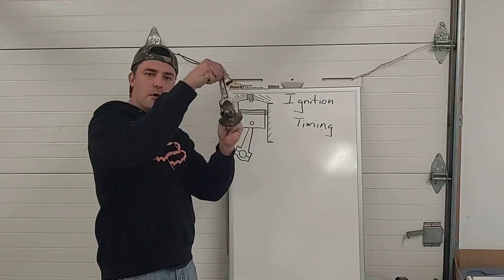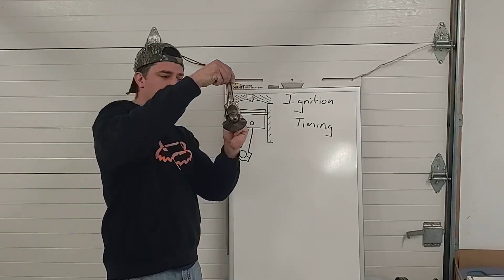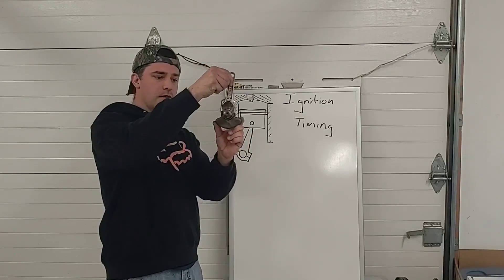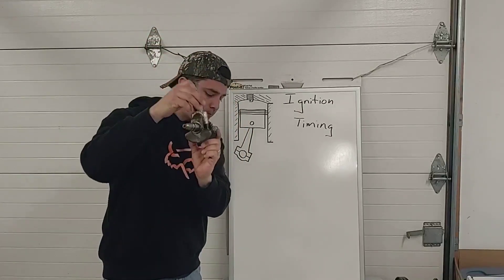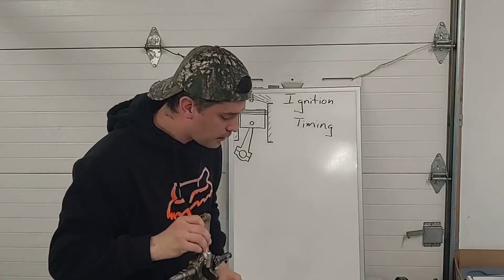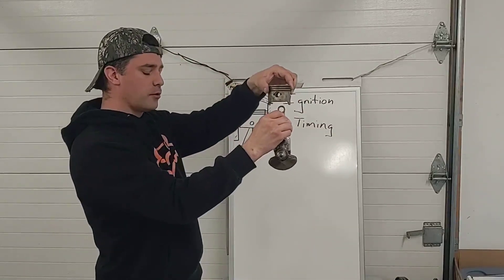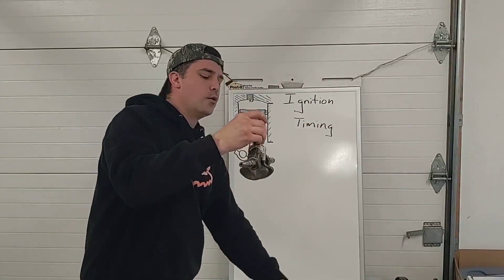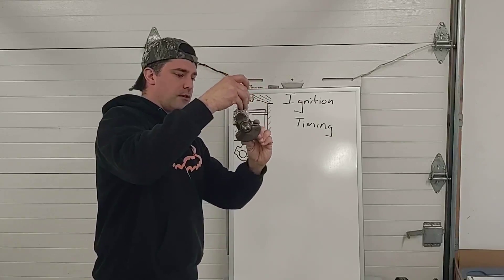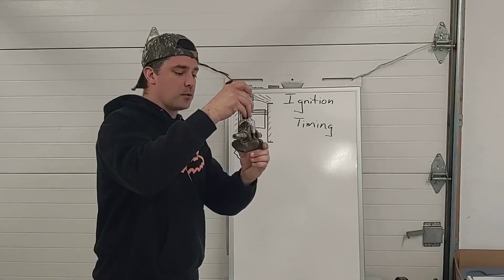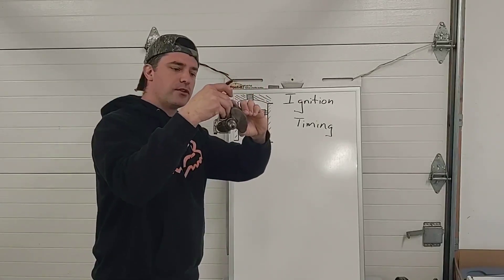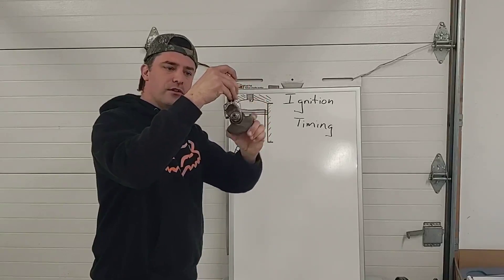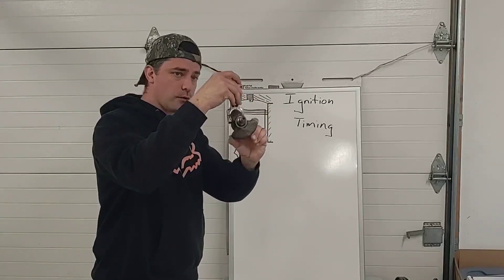As you know, the crankshaft is connected to the piston via a connecting rod. We're going to use some small engine parts today for demonstration. Here's our connecting rod, here's my crankshaft, and here's the piston. We can know exactly where that piston is in the cylinder based on where the crankshaft is in its revolution.